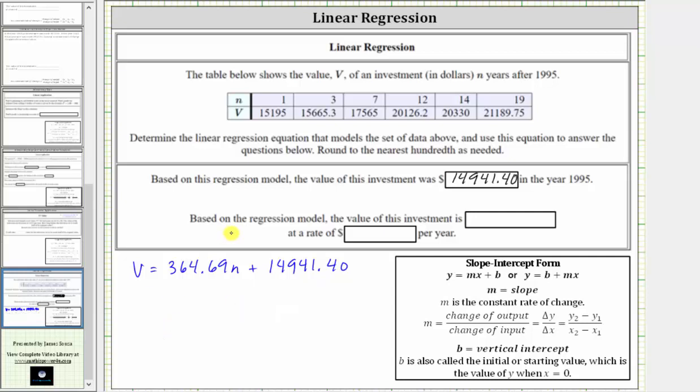And now for the second statement, based upon the regression model, the value of this investment is what, at a rate of how many dollars per year. We can answer this question by determining the slope, which is the constant rate of change, which in our case is the coefficient of n.